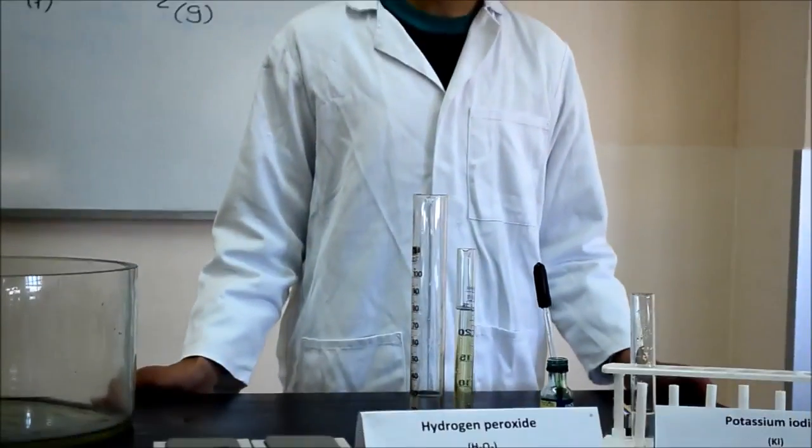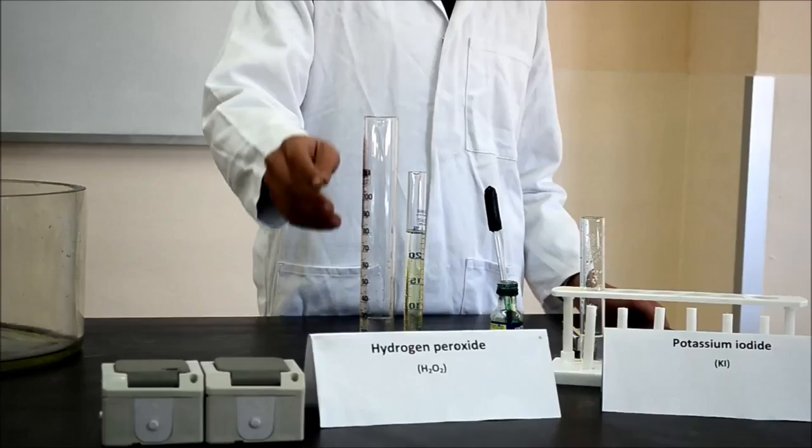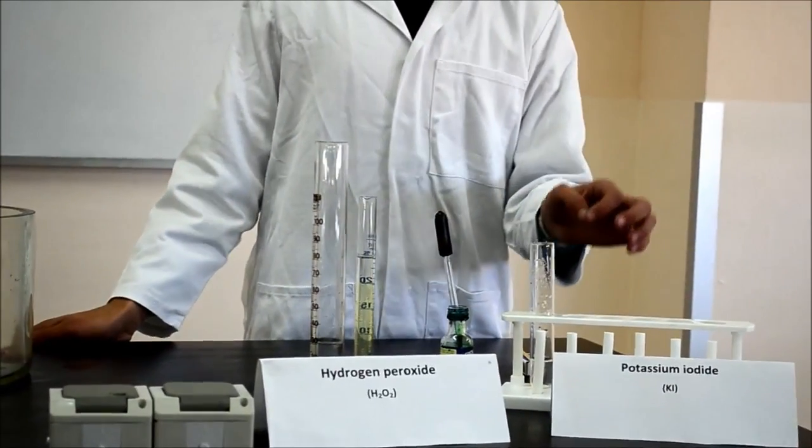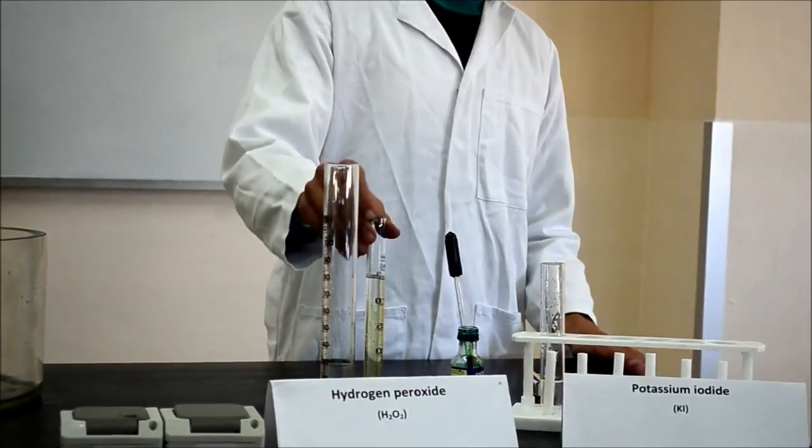For our experiment, we will be using 30 cm³ of 30% hydrogen peroxide, potassium iodide solution, and some soap and food coloring. These are just for visual effect.